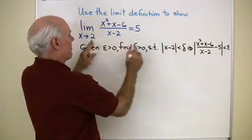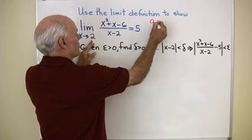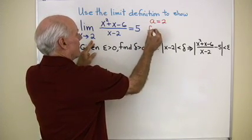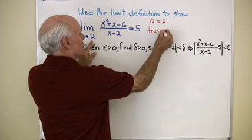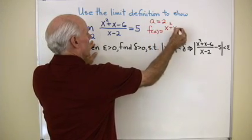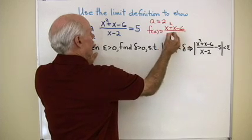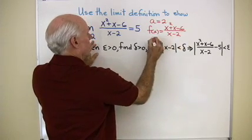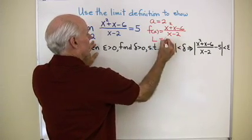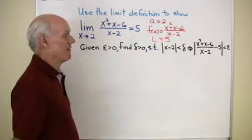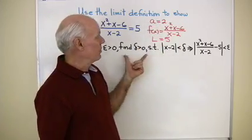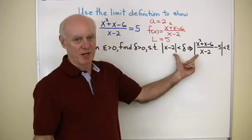And as you can see in this problem right here, a equals 2, f(x) equals (x² + x - 6)/(x - 2), and L, the limit that we're going towards, is equal to 5. So when I take all of this and put it into my limit definition, this is what I get right here.